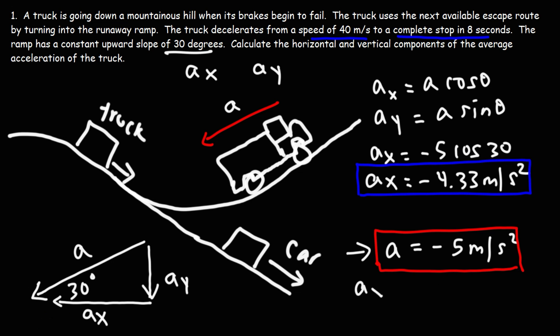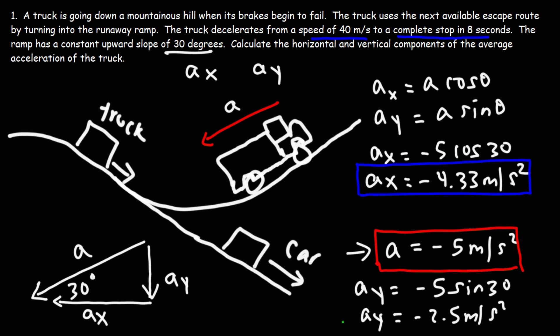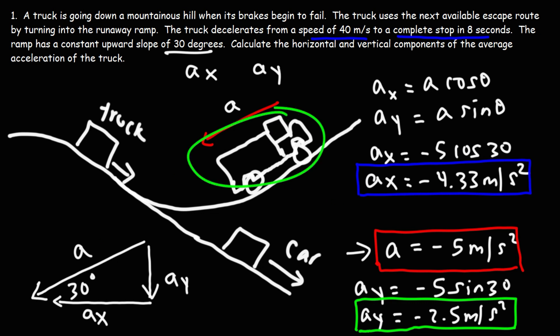To get the y component, it's simply negative 5 times sine of 30. That's how we determine the x and y components of the acceleration acting on a truck that is escaping from a downward hill by turning into the runaway truck ramp.